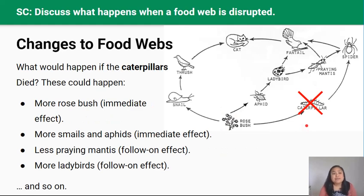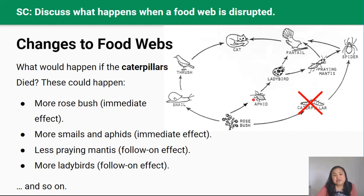What would happen if all the caterpillars died — just the caterpillars, with the rosebush still fine? Caterpillars, snails, and aphids all eat the rosebush. If there were no caterpillars, the immediate effect would be more rosebush available for snails and aphids. The follow-on effect is that with more food, populations of snails and aphids would increase. Also, since spiders have lost one food source, they would need to eat more prey mantis to maintain their population size, so the number of prey mantis would decrease. With fewer prey mantis eating ladybirds, there would be more ladybirds to eat aphids, and so on.